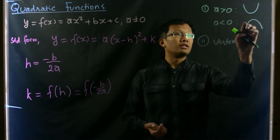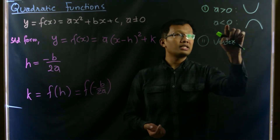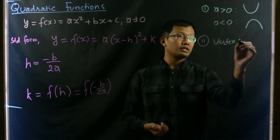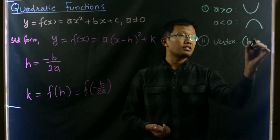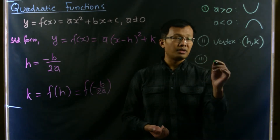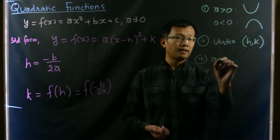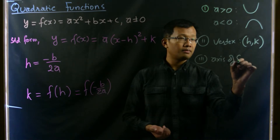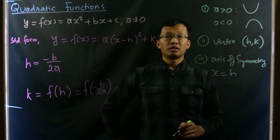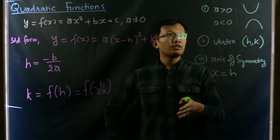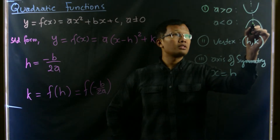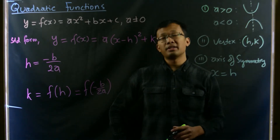The highest point when a is less than zero, or the lowest point of the curve when a is greater than zero, is known as the vertex. The vertex is (h, k). The axis of symmetry is x equals h — it's the vertical line which cuts the curve into exactly two halves.